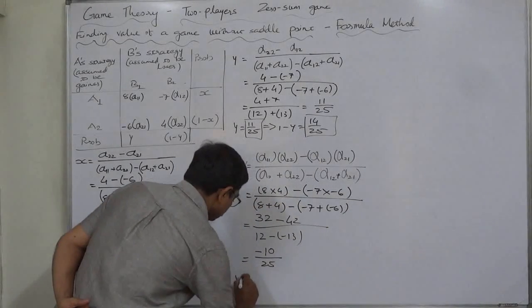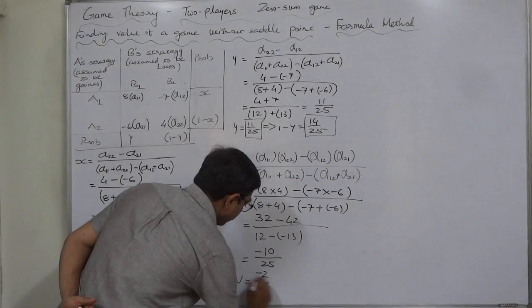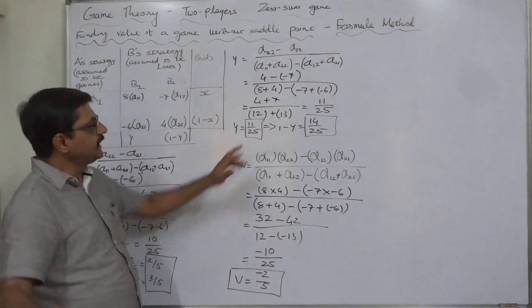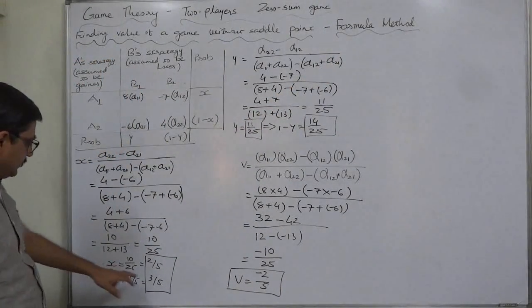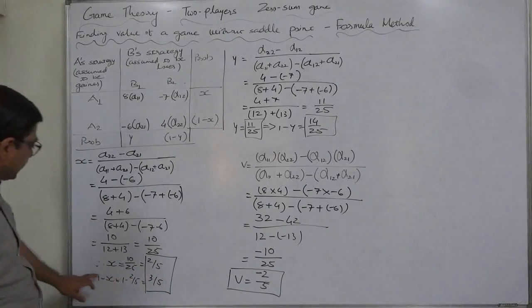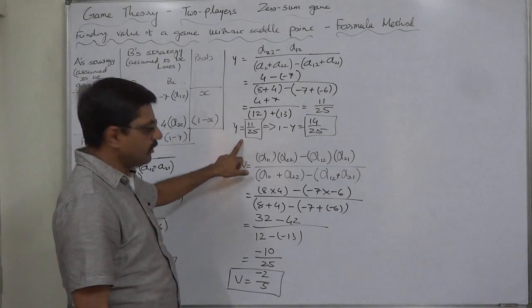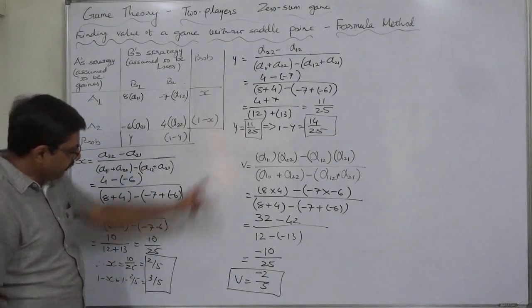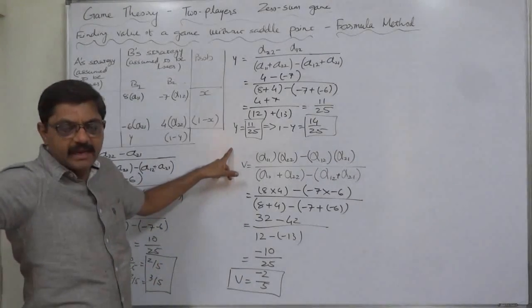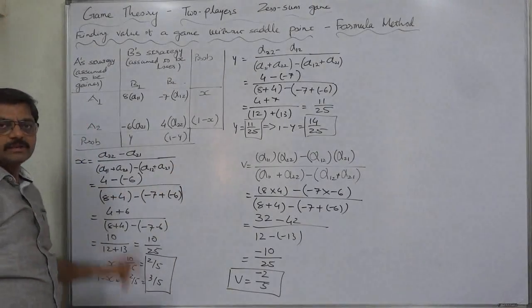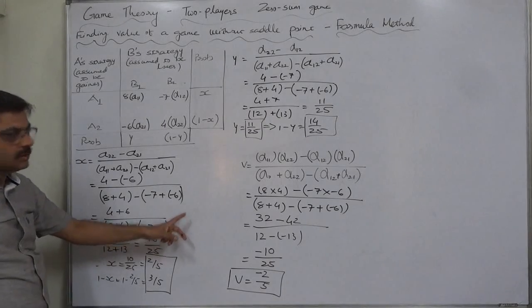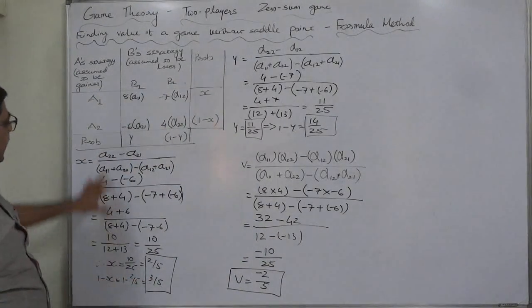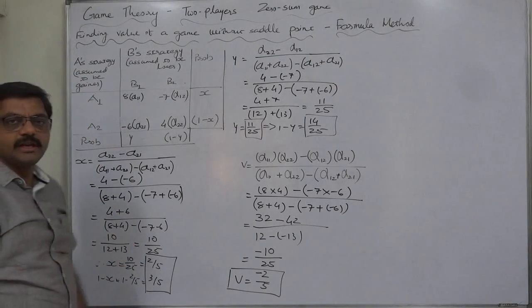As I told this is the same case as we had discussed in the algebraic method compare it with that. The results of that case x equals to 2 by 5 the same was there, y equals to 11 by 25 same was there, value of game was minus 2 by 5. If we calculate the expected payoff of A as well as B in the same way that will come minus 2 by 5 for A. Minus 2 by 5 is loss for A. For B loss minus 2 by 5 becomes the gain. So ultimately we can conclude that A should play strategies A1 and A2 in the ratio of 2 is to 3 in random manner.